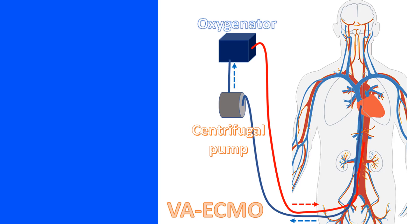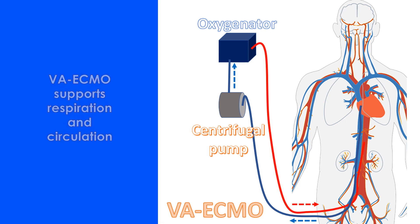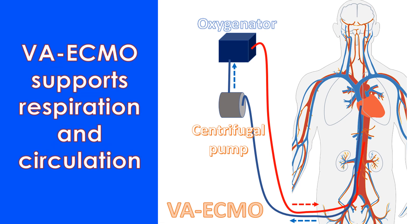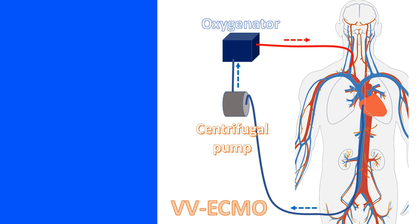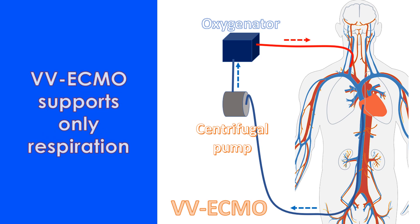ECMO circuits are of two types: Veno-arterial or VA ECMO, and Veno-venous or VV ECMO. In Veno-arterial ECMO, deoxygenated blood is drained from the femoral vein and oxygenated blood is delivered through a cannula introduced into the femoral artery. Veno-arterial ECMO supports both respiration and circulation. Veno-venous ECMO involves drainage of deoxygenated blood from the femoral vein and delivery of oxygenated blood into the jugular vein, providing only respiratory support.